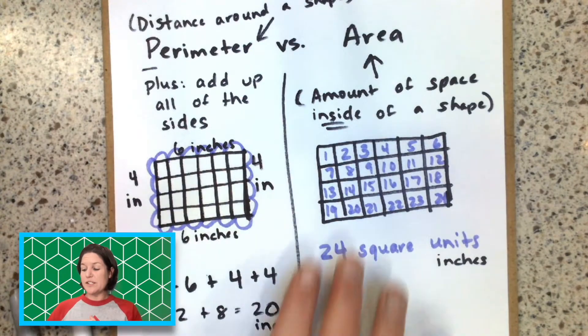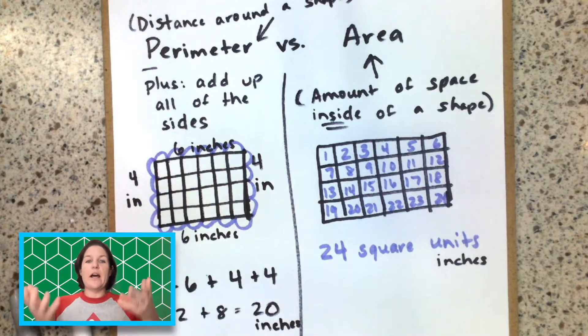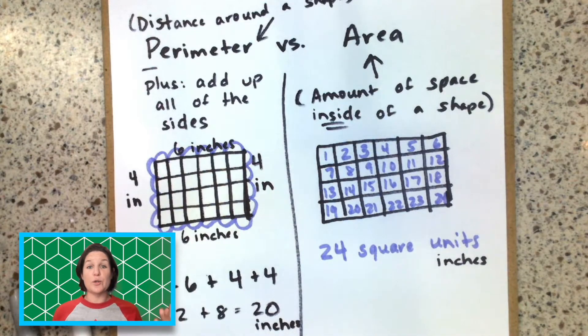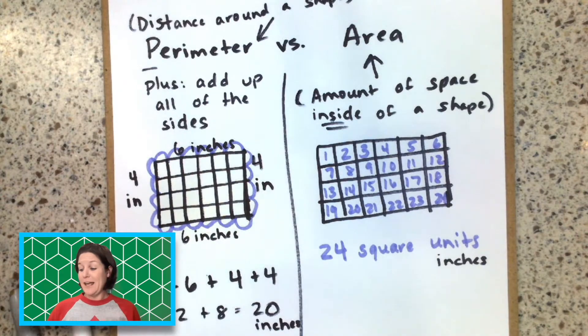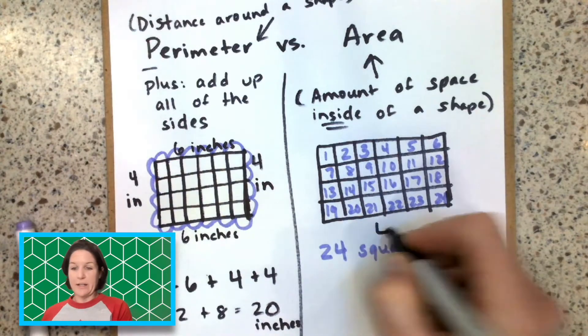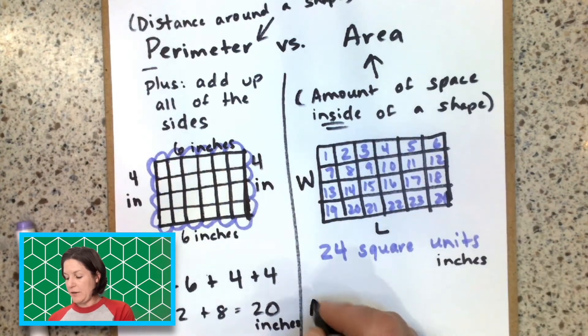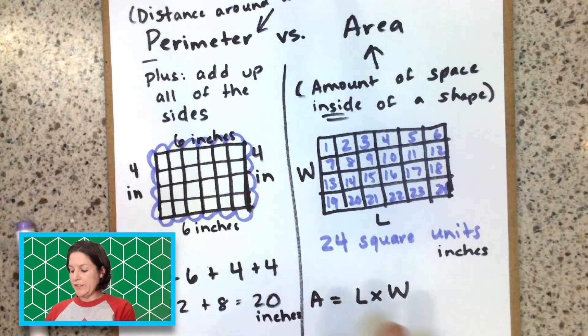After we teach students that it is the amount of space inside of an object, we can then go ahead and upgrade their understanding to the fact that in order to find the area of a rectangle, we can find the length and multiply it by the width. This is the length across. This is the width. And area has the formula of length times width.